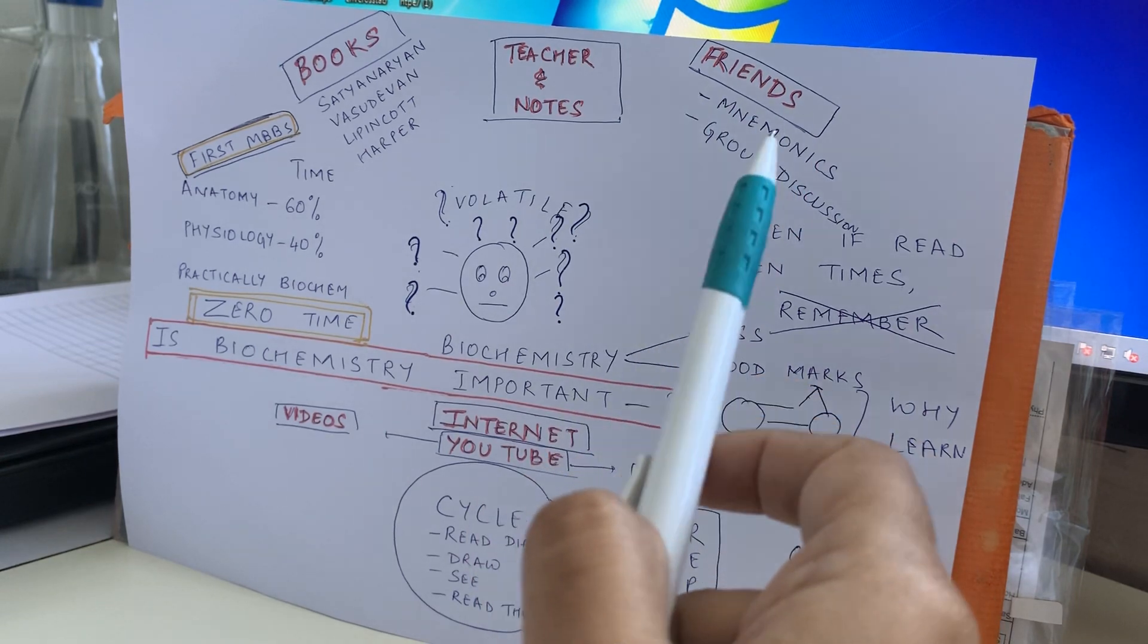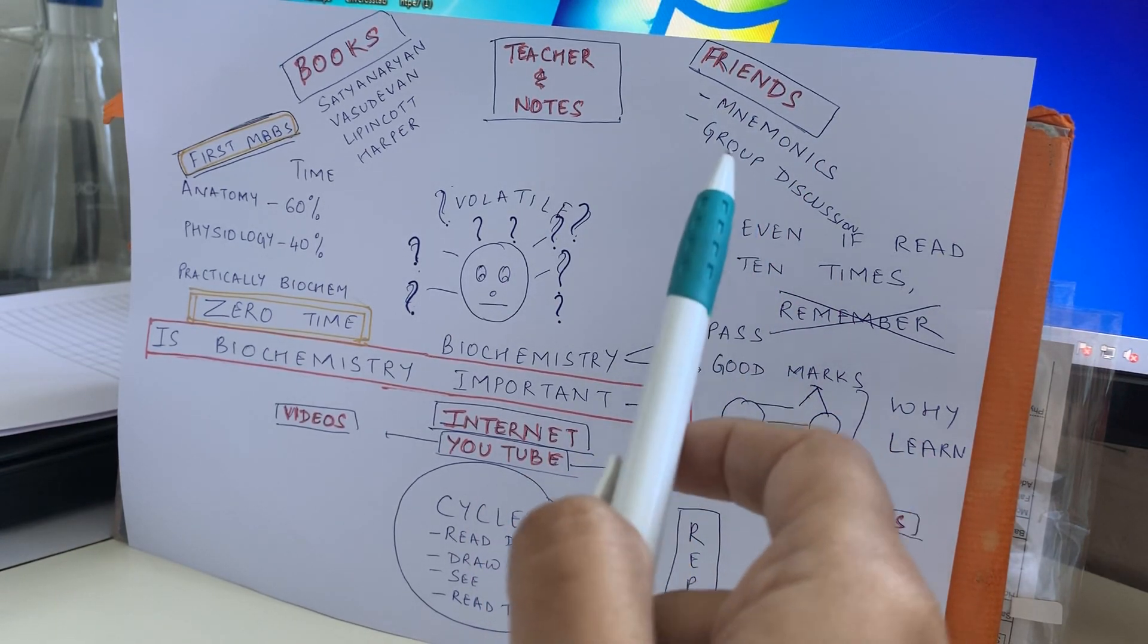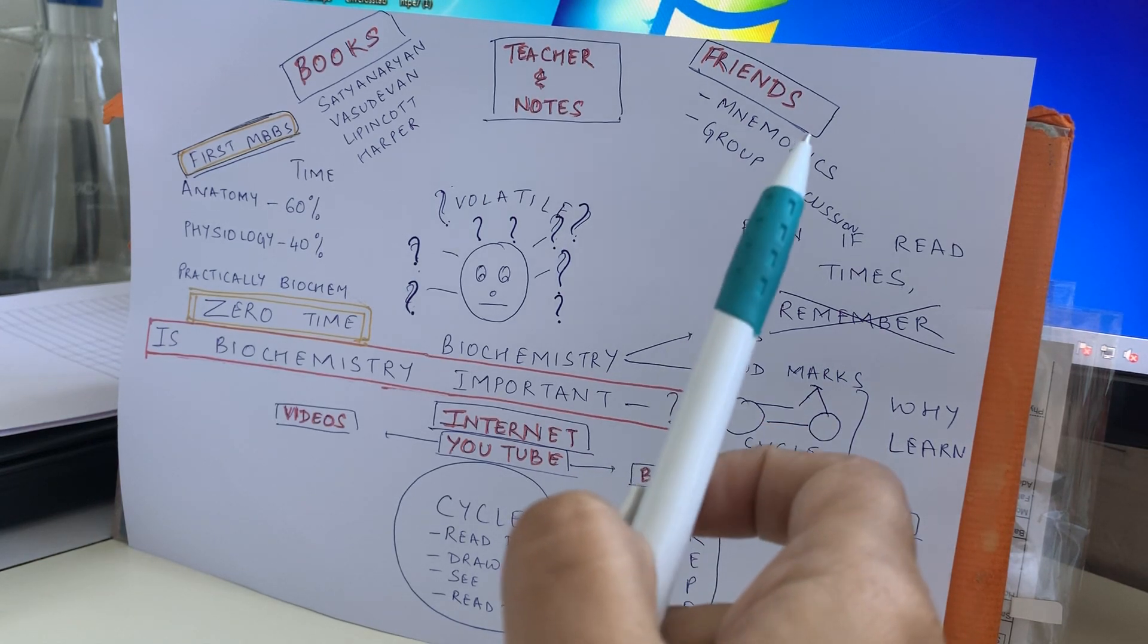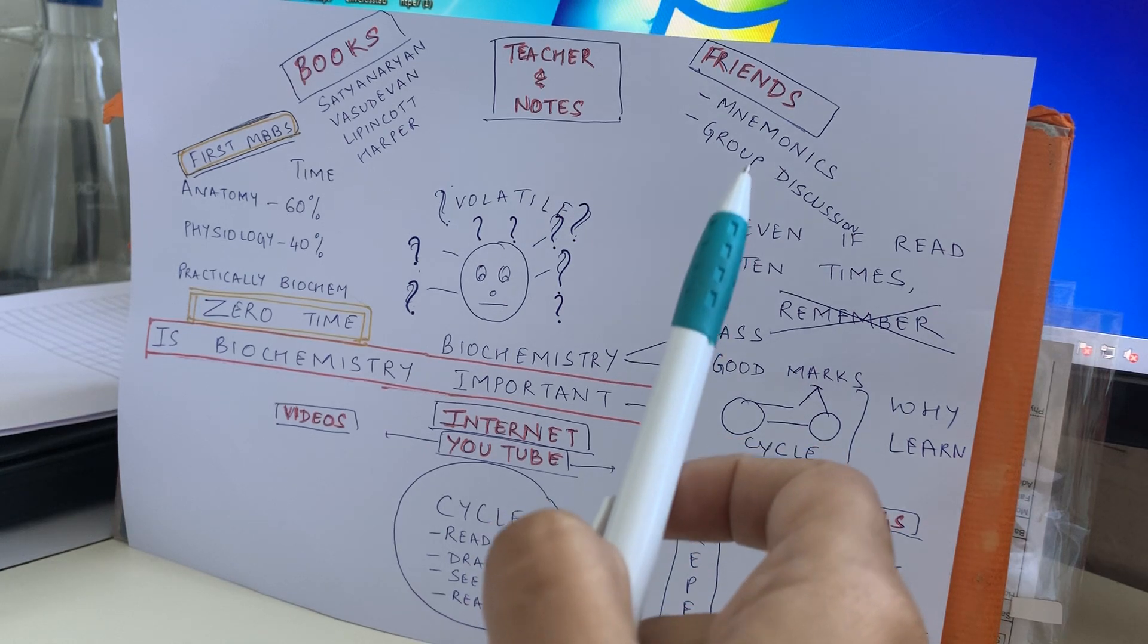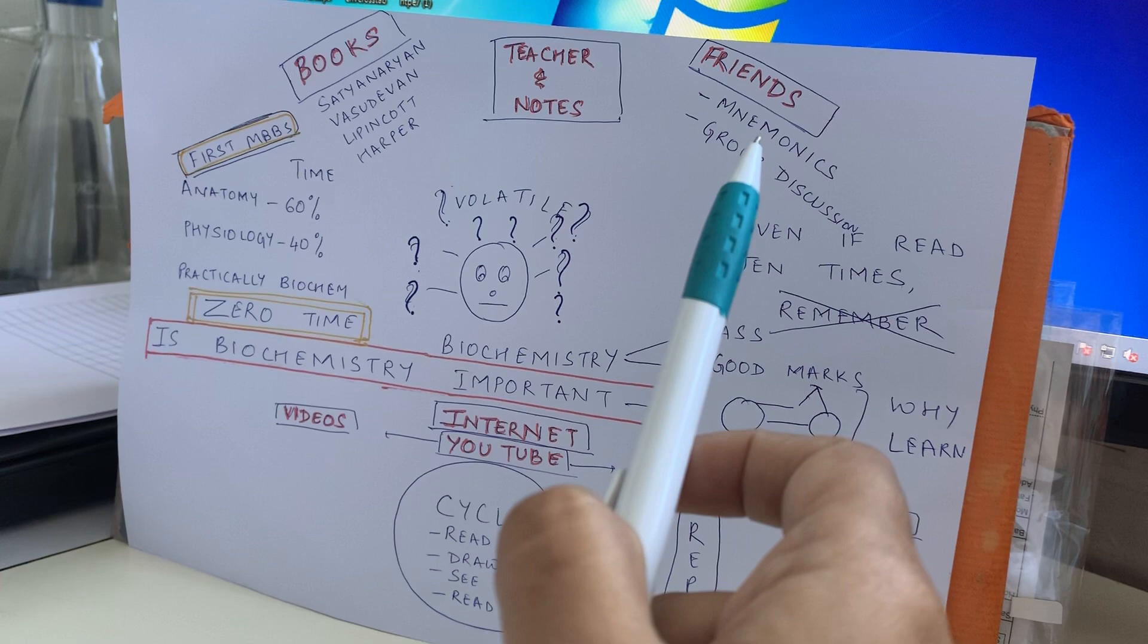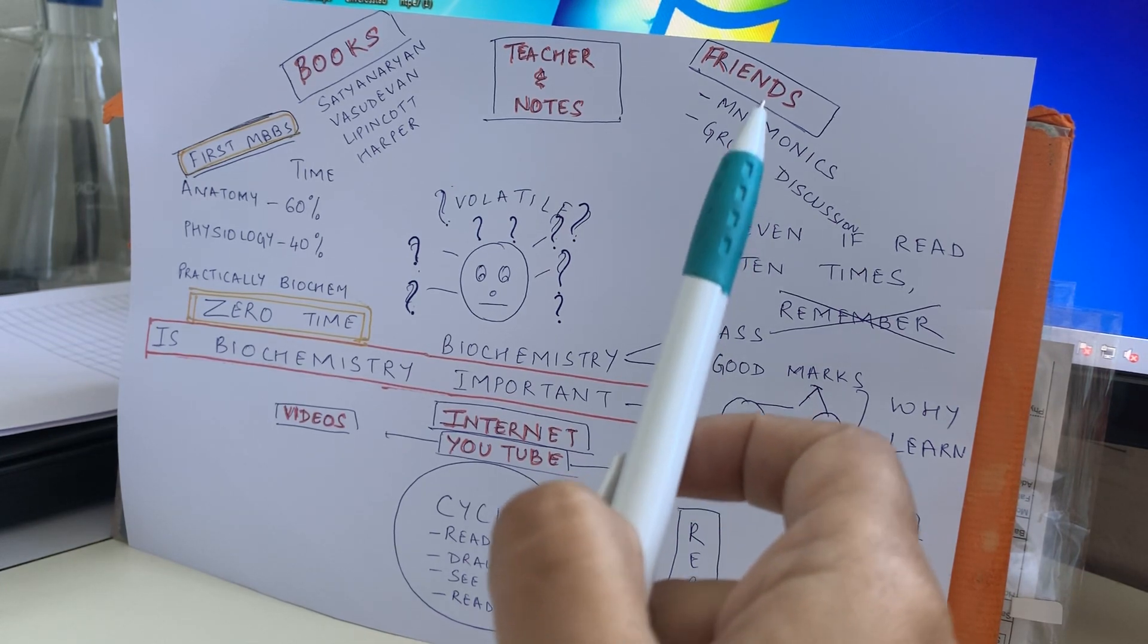Friends - group discussions - the most important thing. But that we utilize only for anatomy, we utilize it for bones, artery, nerves, veins, their roots, but nothing that sort for biochemistry. And mnemonics - so the thing you can do is you can make mnemonics, discuss with your friends, and it will be very helpful.